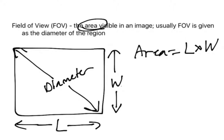So sometimes the field of view is given as the area, it's also given as the length, or it could be given as the width value, or it could be given as the diameter, with the diameter being the most common way to express the field of view.